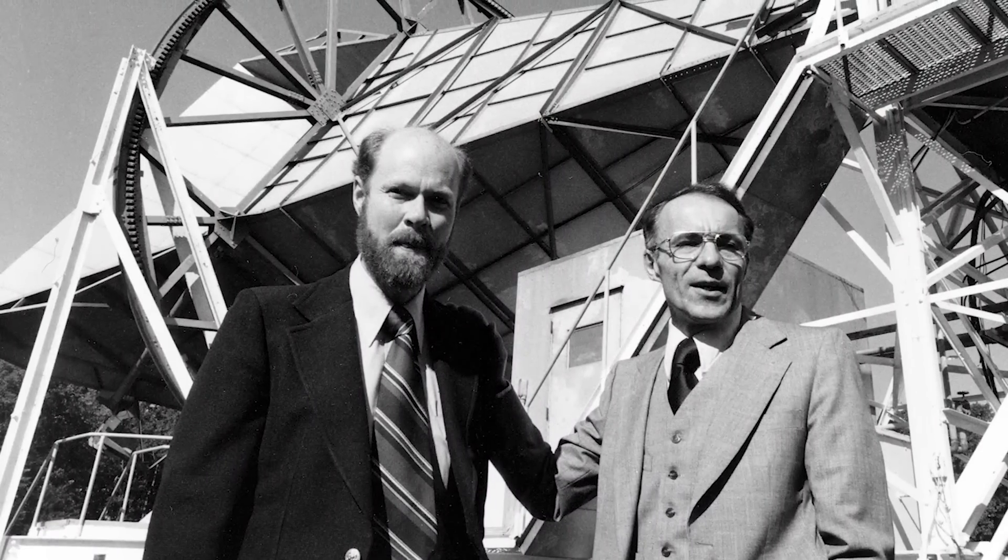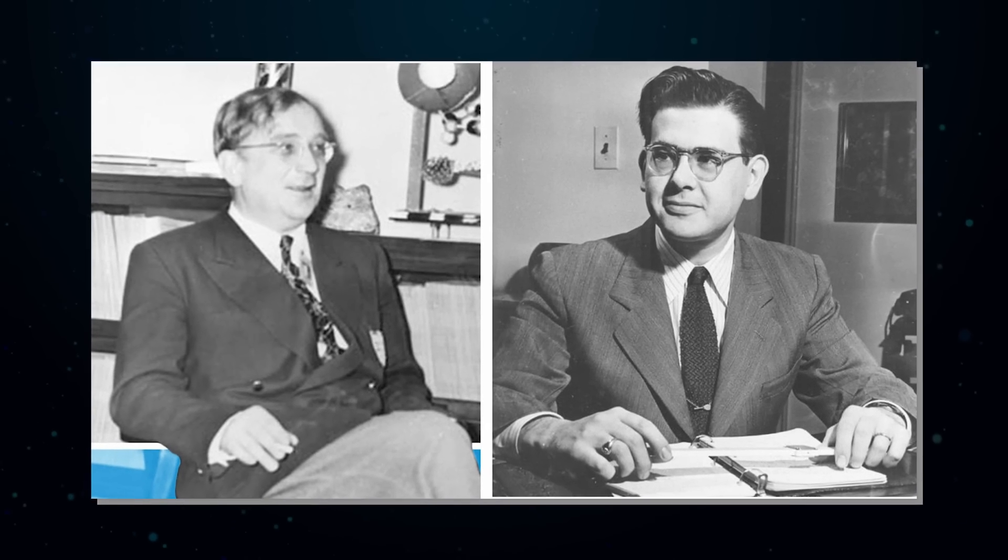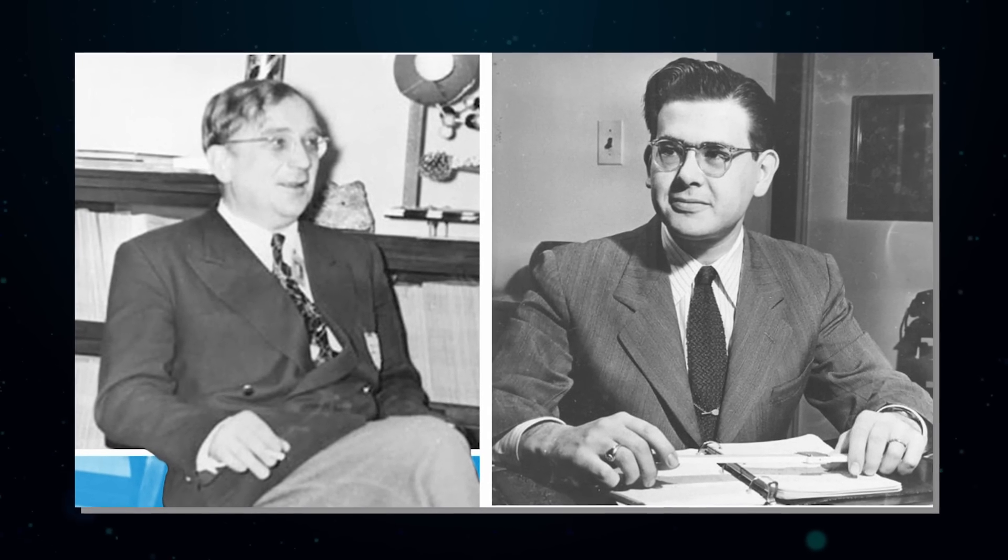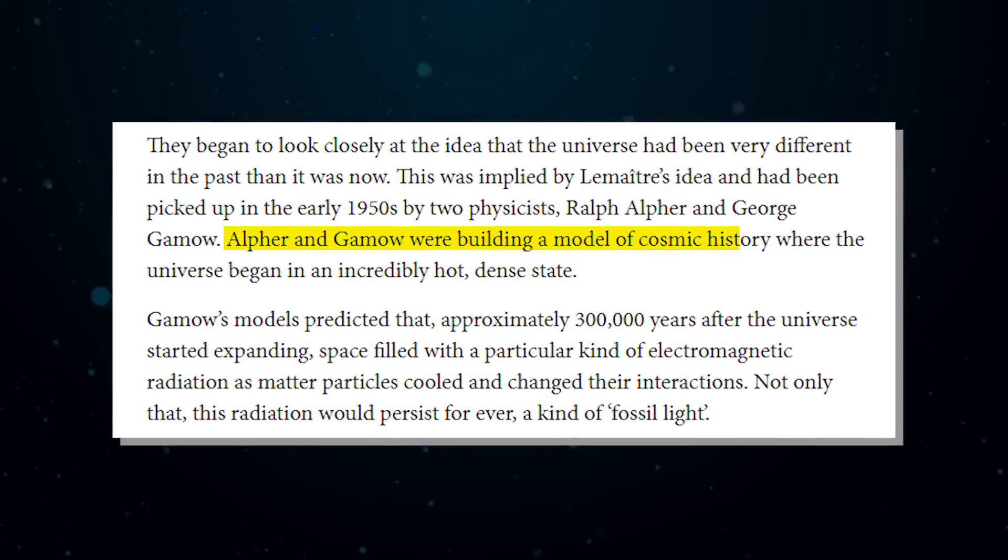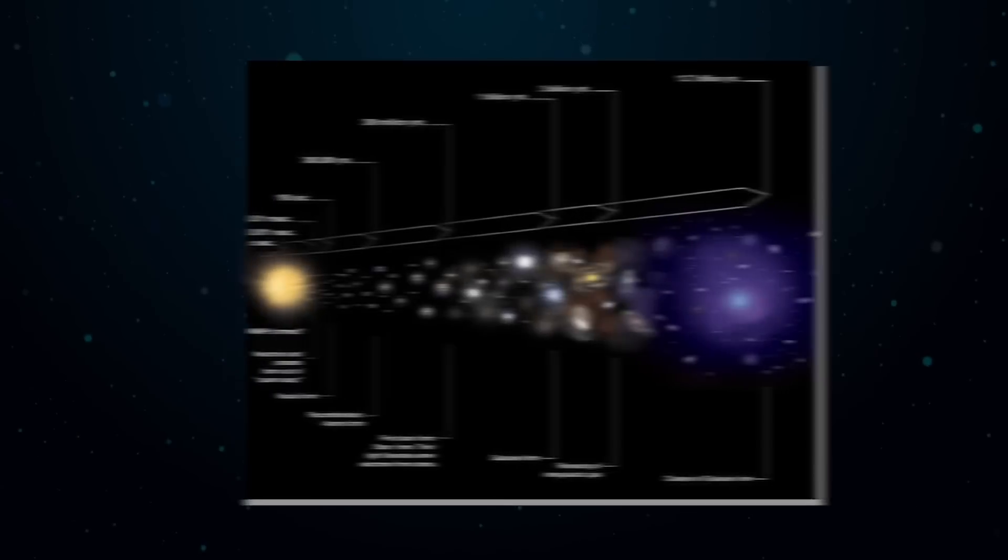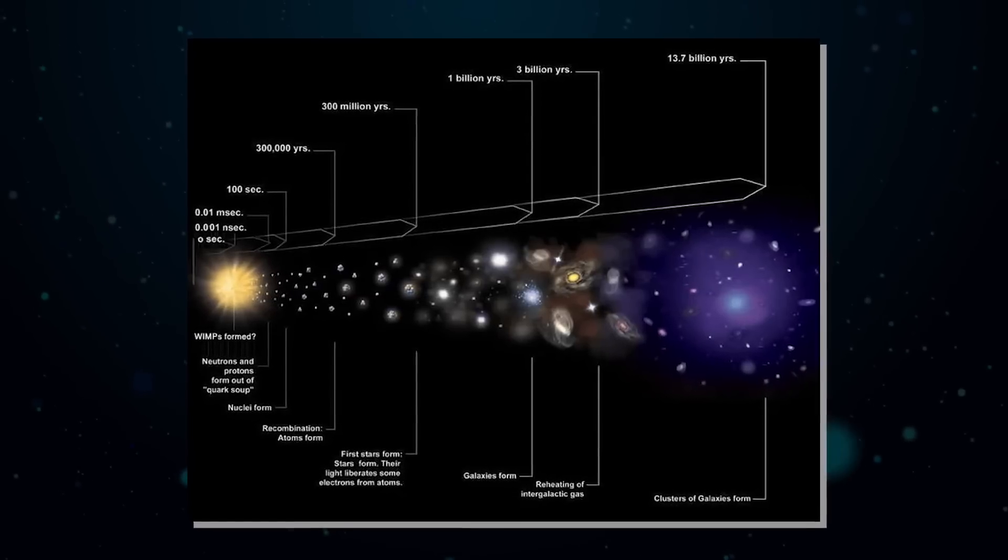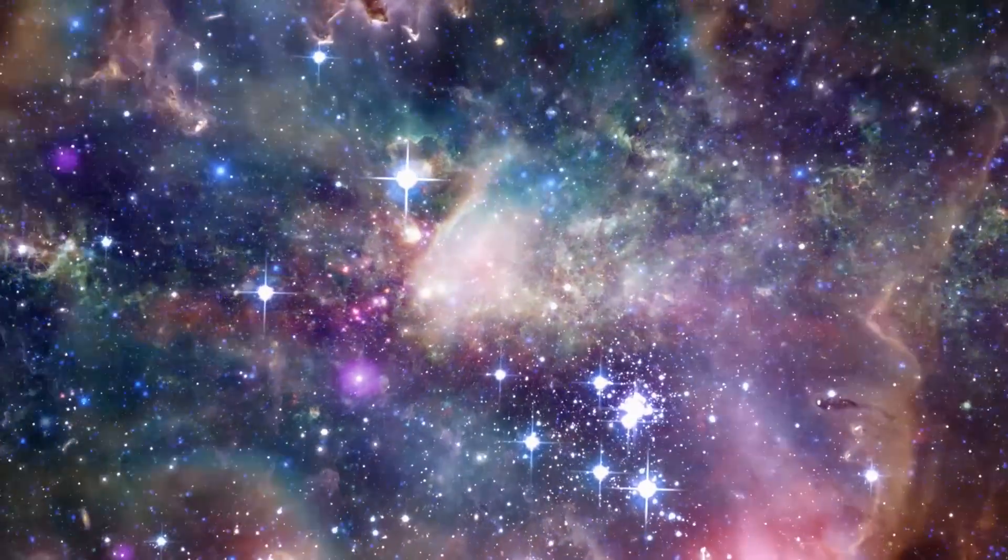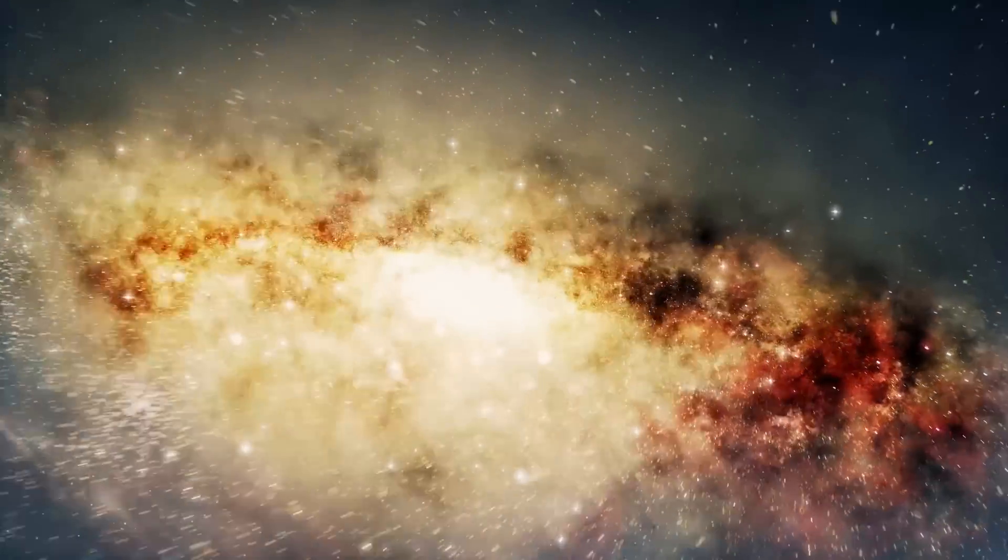They began to look closely at the idea that the universe had been very different in the past than it was now. This was implied by Lemaitre's idea, and had been picked up in the early 1950s by two physicists, Ralph Alfer and George Gemau. Alfer and Gemau were building a model of cosmic history where the universe began in an incredibly hot, dense state. Gemau's models predicted that approximately 300,000 years after the universe started expanding, space filled with a particular kind of electromagnetic radiation as matter particles cooled and changed their interactions.